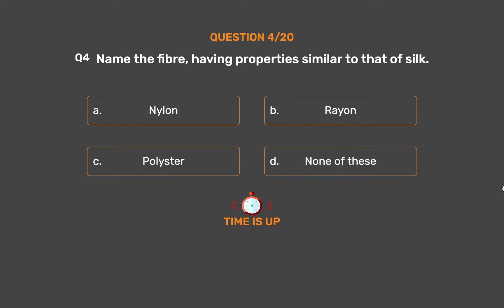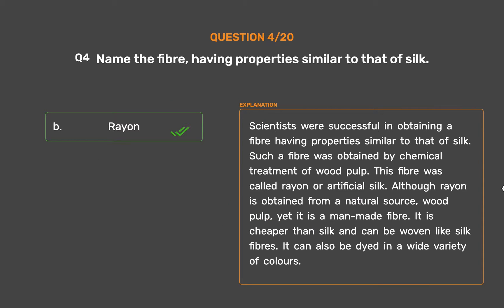The correct answer is Option B: Rayon. Scientists were successful in obtaining a fiber having properties similar to that of silk. Such a fiber was obtained by chemical treatment of wood pulp. This fiber was called rayon or artificial silk. Although rayon is obtained from a natural source — wood pulp — yet it is a man-made fiber. It is cheaper than silk and can be woven like silk fibers. It can also be dyed in a wide variety of colors.